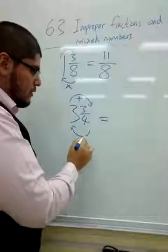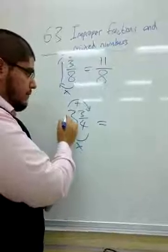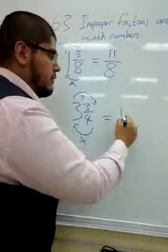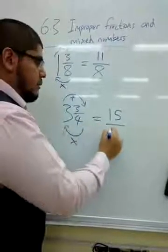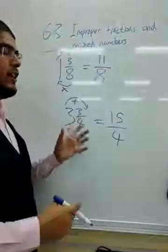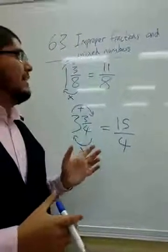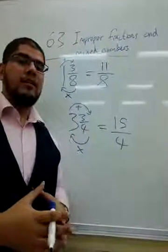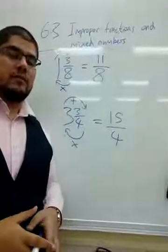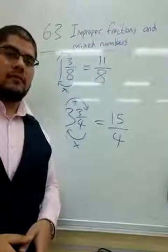So, that gives us 4 multiplied with 3, which is 12, plus 3, which is 15, over the denominator, which is 4. So, you see, the denominator stays constant throughout the whole thing, and this is how any improper fraction can be expressed as a mixed number or vice versa.